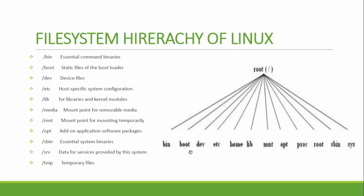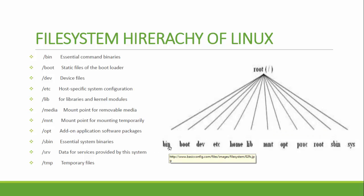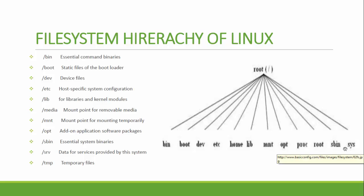Slash boot is a default directory under slash and has all bootable files. We refer to directories using their full path — for example, slash boot, slash home. Slash bin is for commands; most commands will be in slash bin, while special commands will be in slash sbin. Slash boot is for bootable files, and slash dev is for device files — like CD drives, USB drives, and internal hard disks. All hardware-related storage files will be in slash dev.